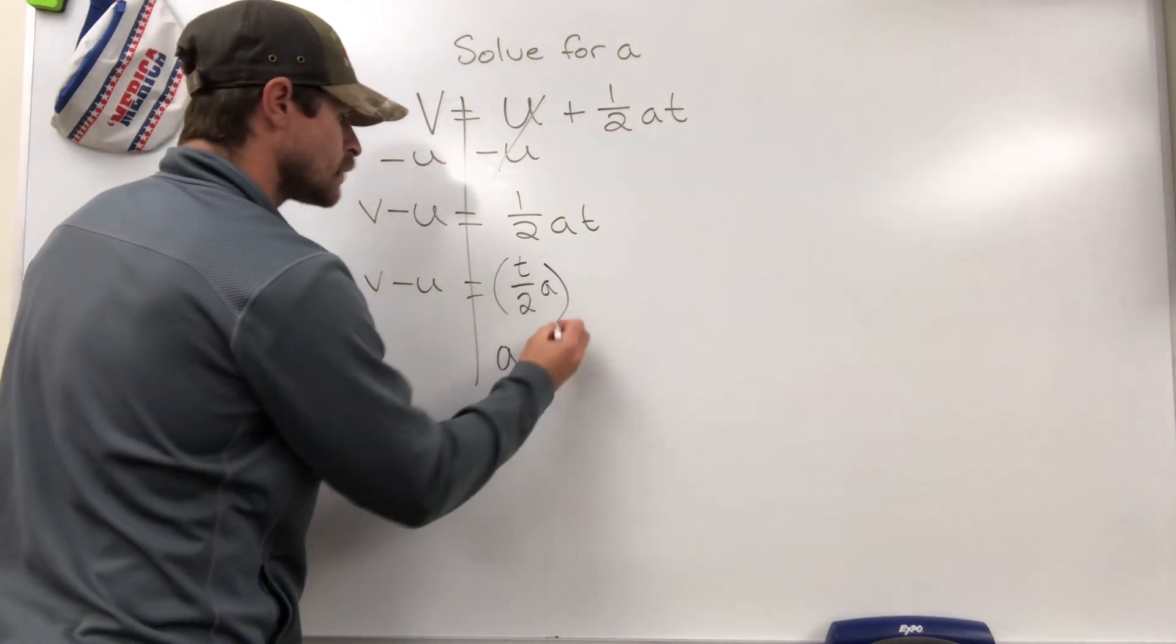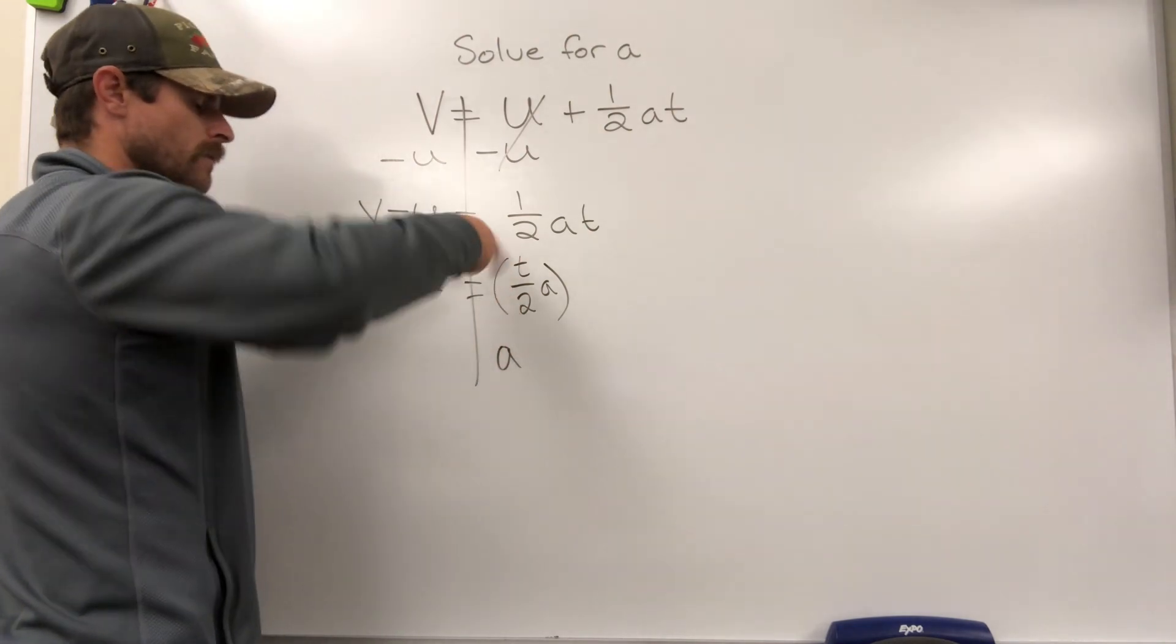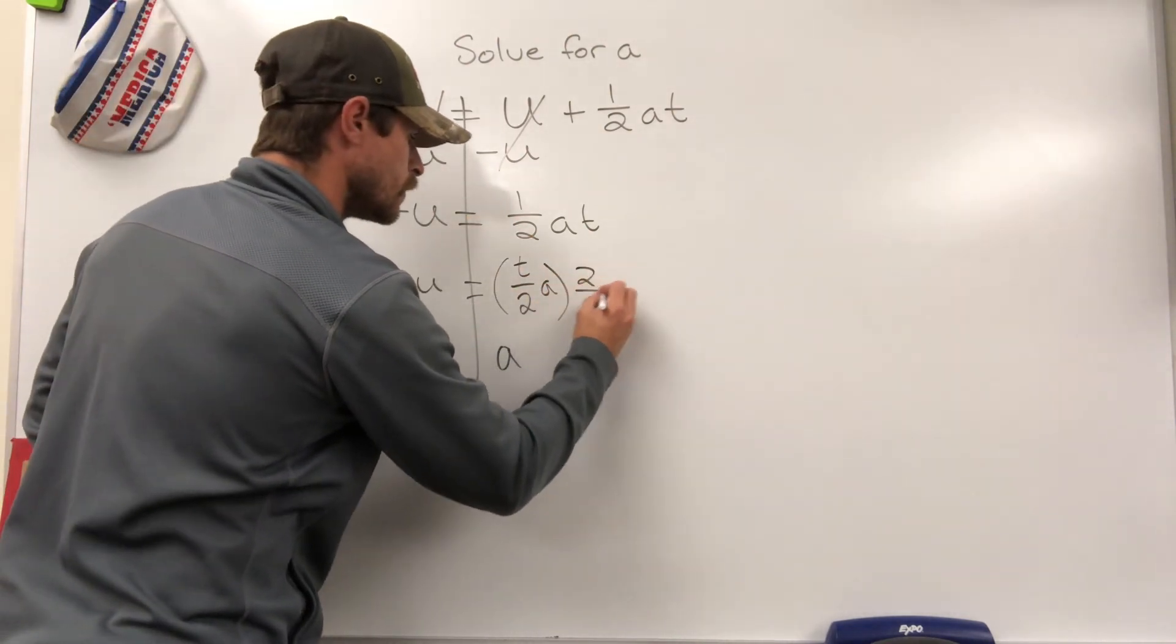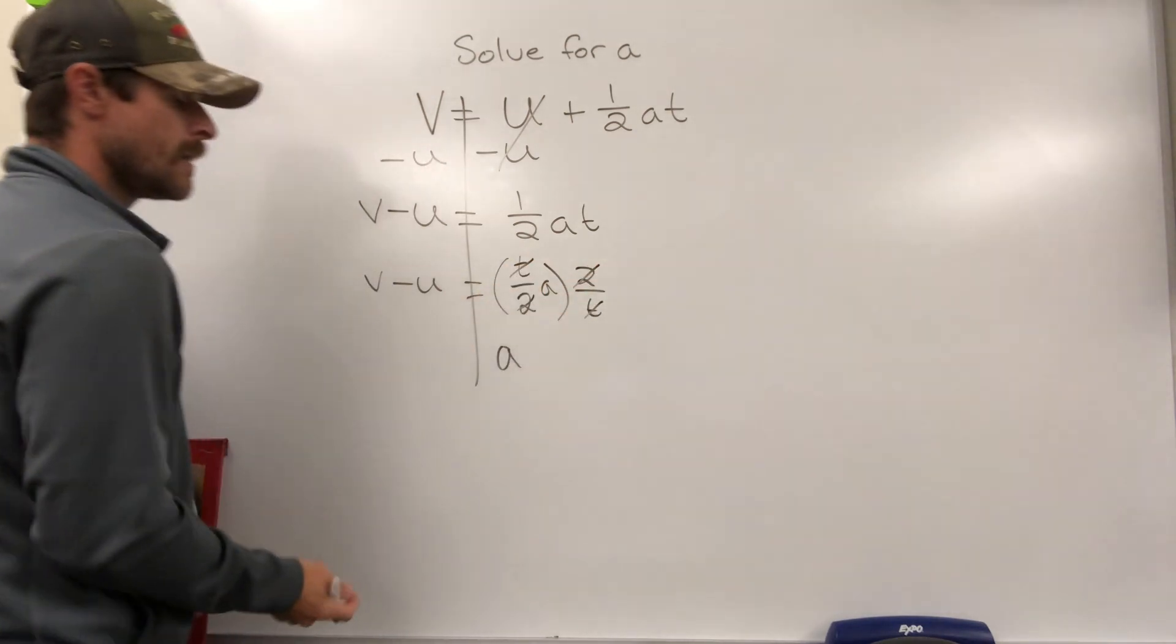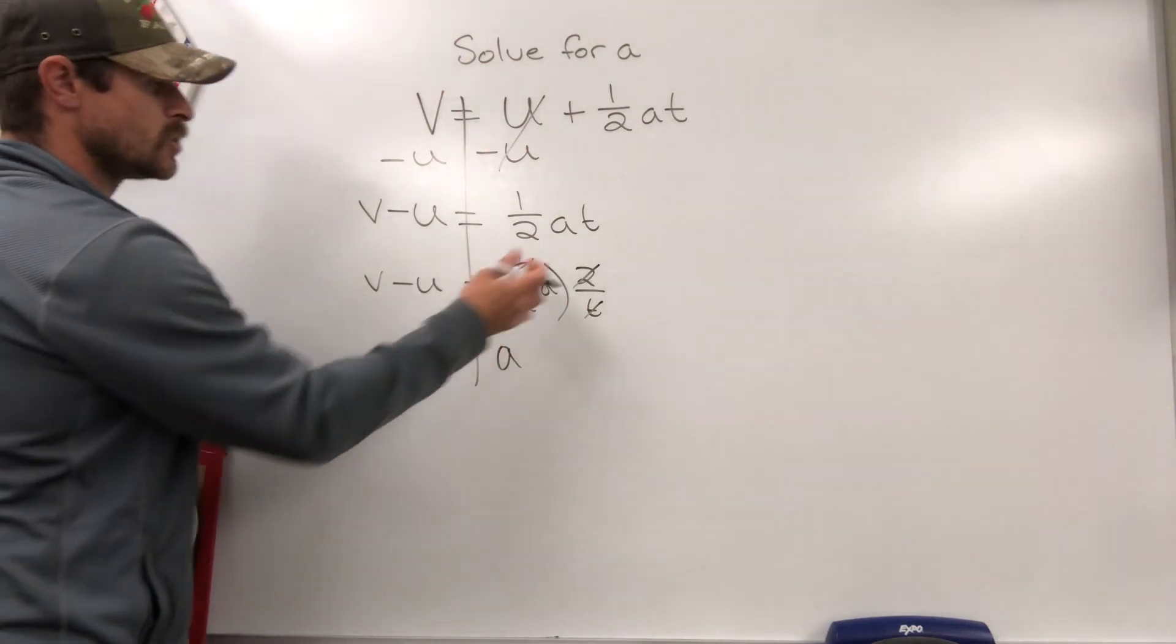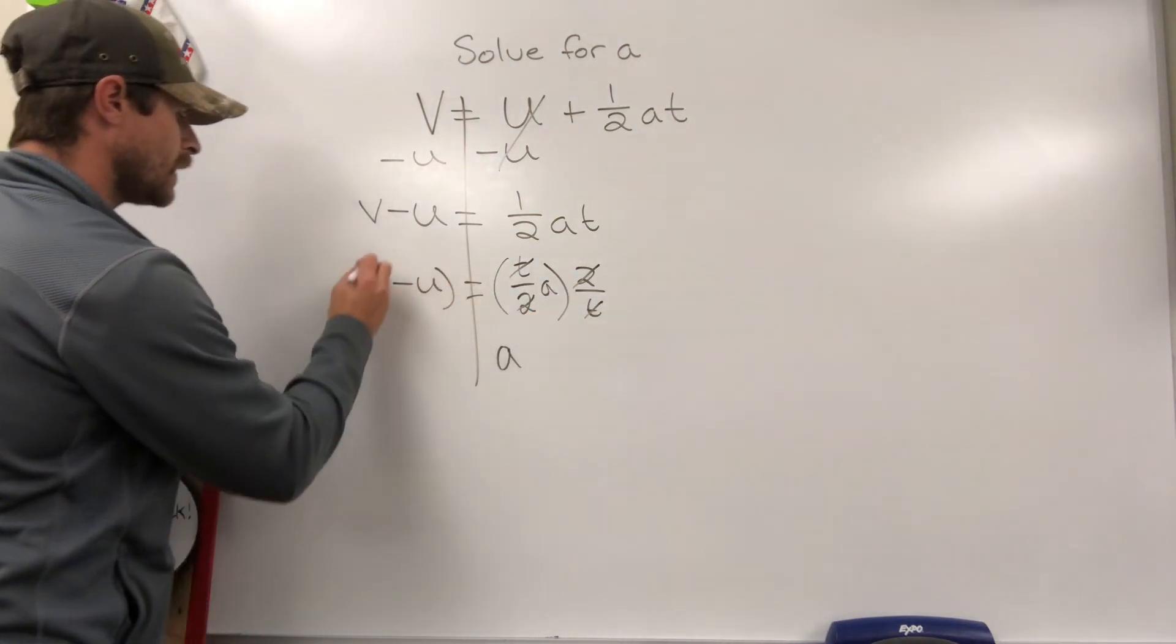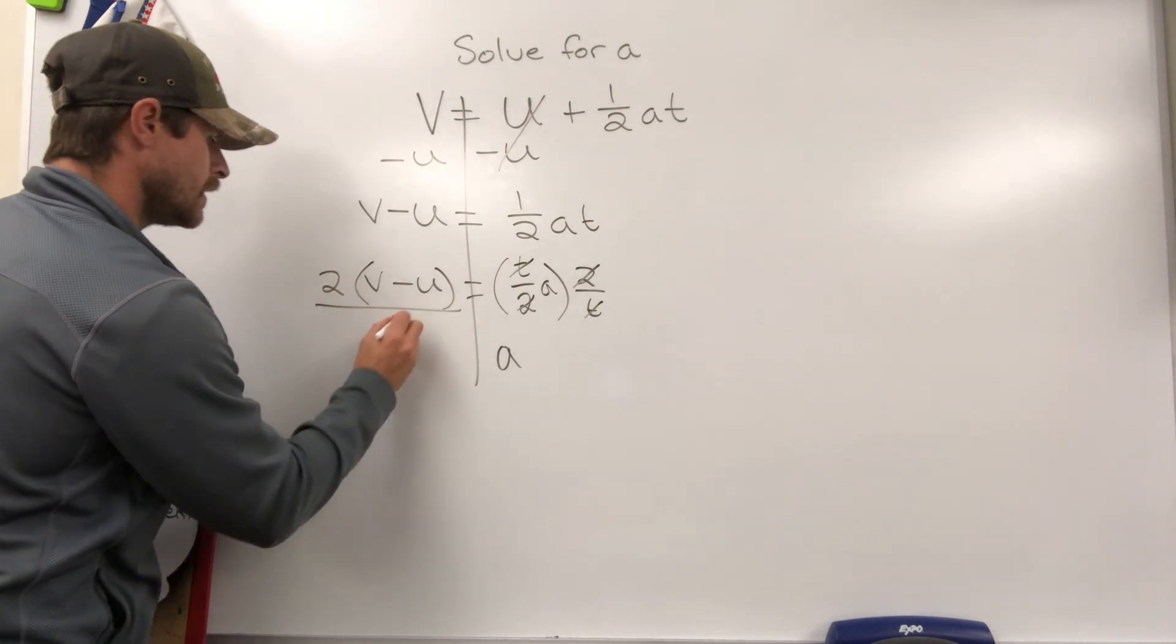I'm going to put parentheses around that term and multiply by T over 2 flipped—that would be 2 over T. That 2 cancels this 2, and the T cancels the T. If I multiply the right side by 2 over T, then I need to multiply the left side by the same thing—2 over T.